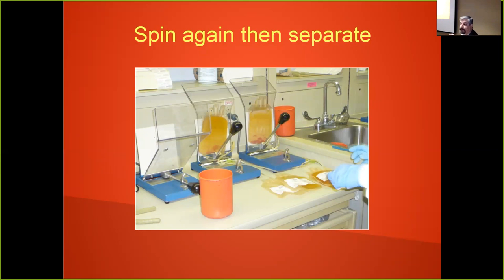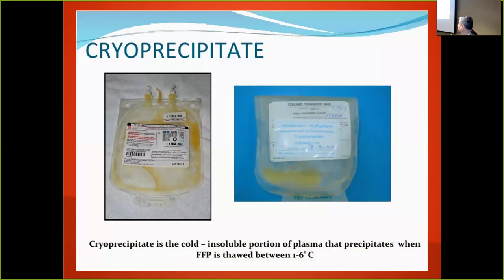Plasma is routinely frozen while it's fresh — that's why it's called fresh frozen. Coagulation factors deteriorate rapidly in unfrozen plasma, so freezing keeps them effective for up to a year. Within a few weeks unfrozen, you'll have less Factor VII and less Factor II. If you thaw plasma only up to four degrees, a small portion doesn't fully thaw — that precipitate is cryoprecipitate.